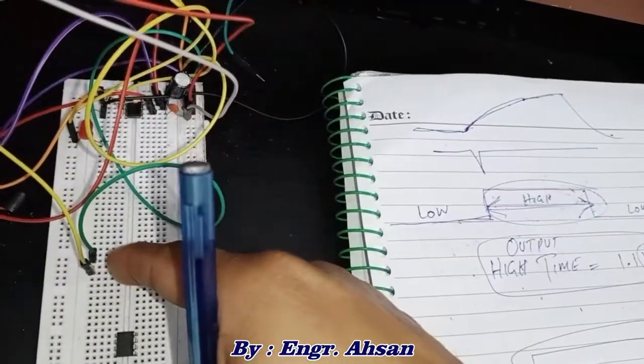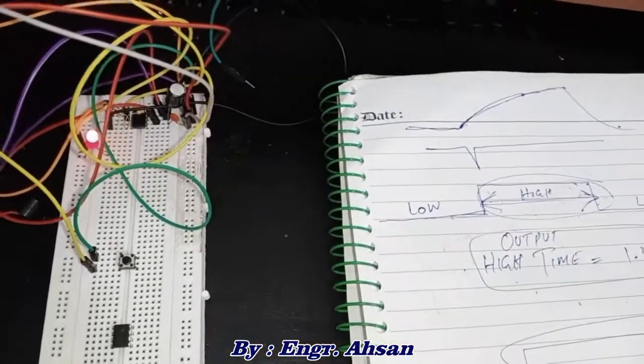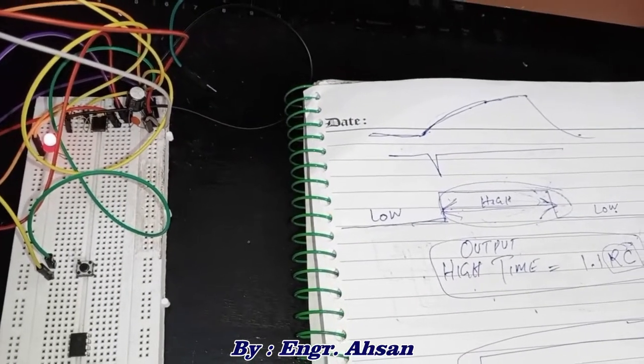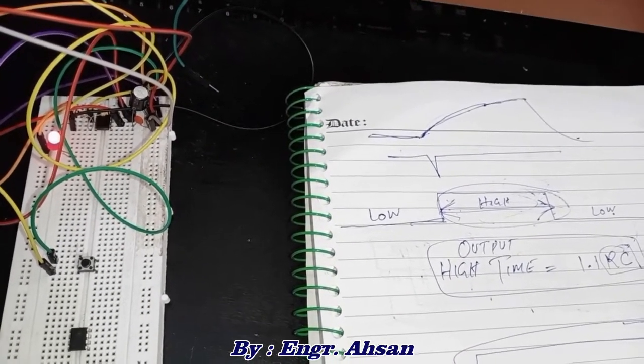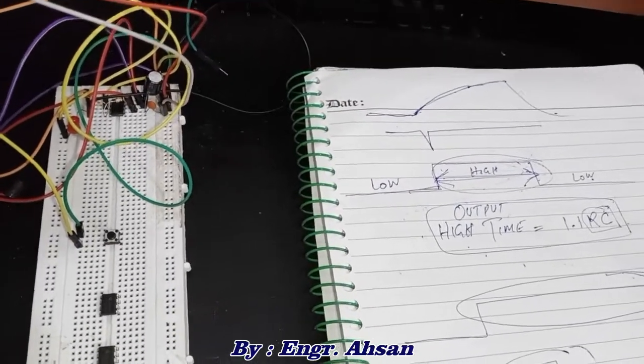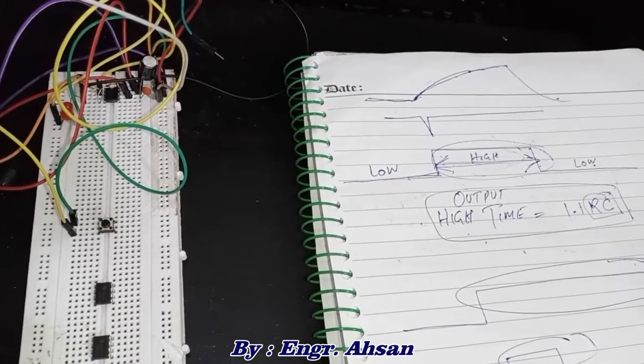Let's do it again. This is the trigger pulse. It became high, and after a few seconds, almost seven seconds, it became low again. This is how it works, and this is the 555 timer in monostable mode.